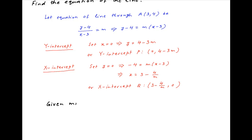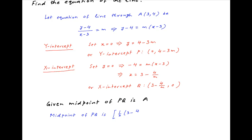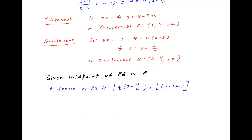Now we are given that the point A with coordinates (3, 4) is the midpoint of line PQ. The coordinates of the midpoint of line PQ are half of (3 minus 4 upon m) and half of (4 minus 3m). The coordinates of point A are (3, 4).